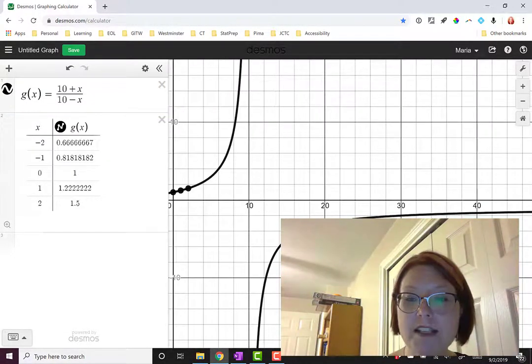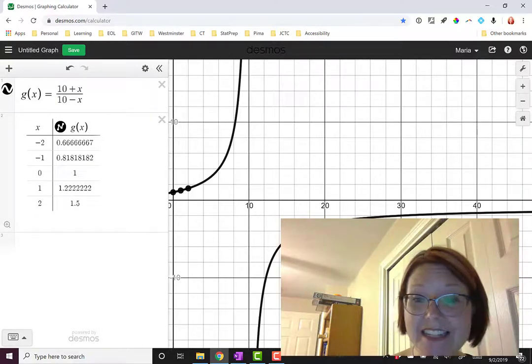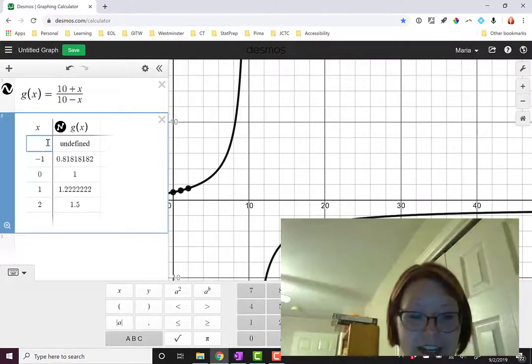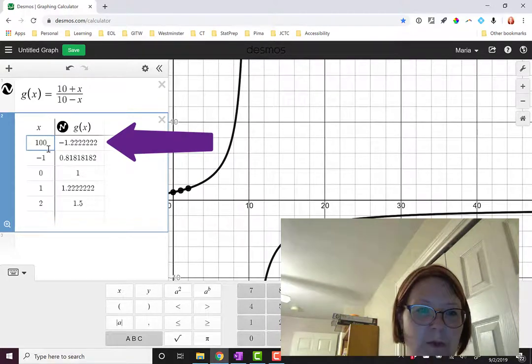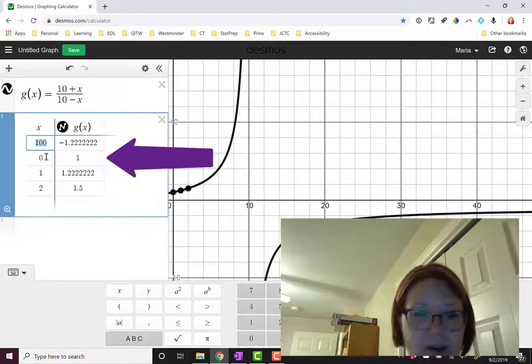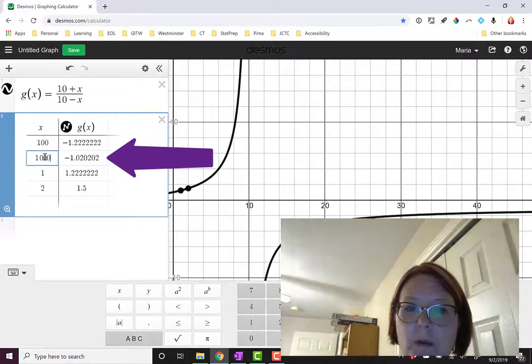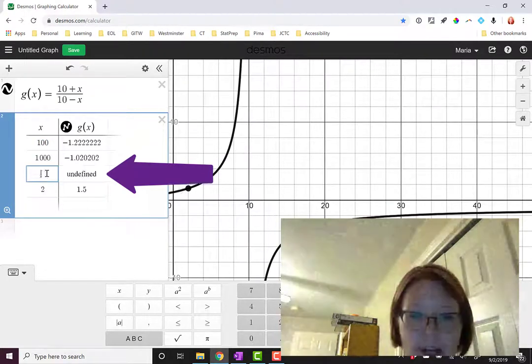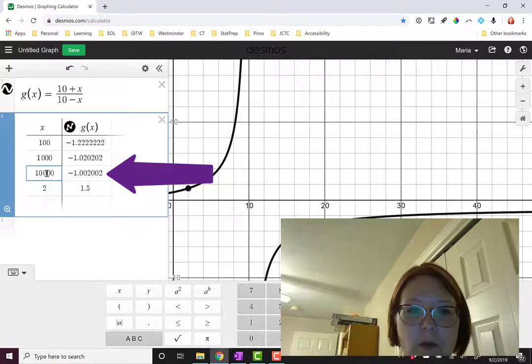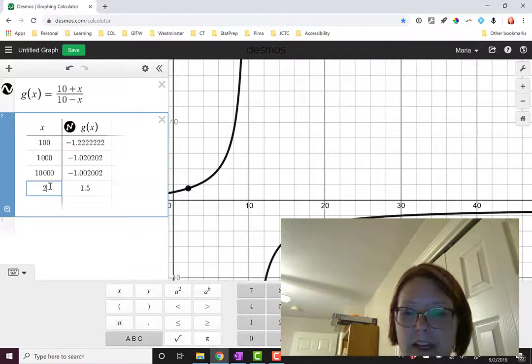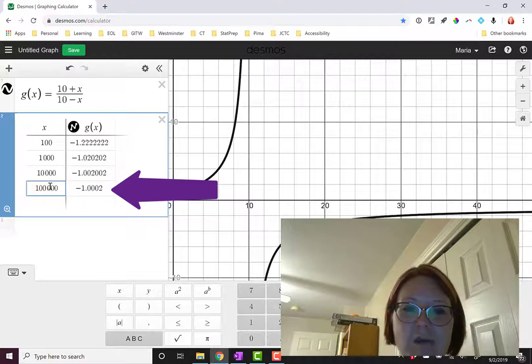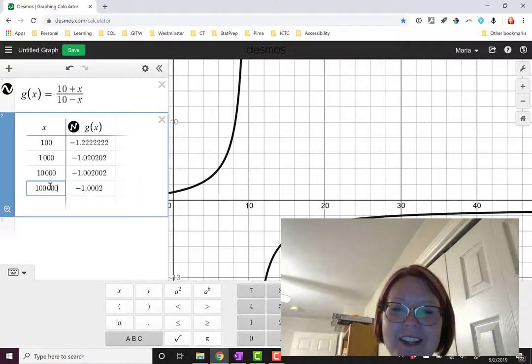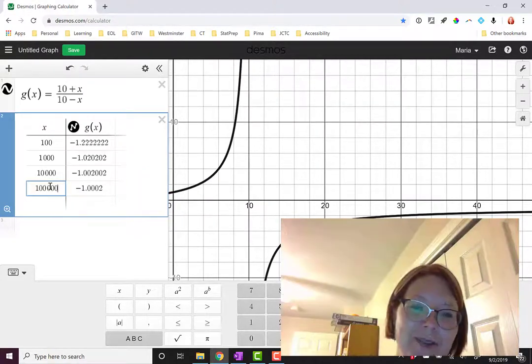Let's move over in the positive direction first. Since 10 isn't allowed, I'm going to start by changing -2 to positive 100. That gives me a value of -1.222 repeating. Let me try a value of 1000. It gives me -1.0202 repeating. How about 10,000? -1.0002. I'm getting closer and closer to -1. I'll try 100,000: -1.00002. So you can see I'm getting closer and closer to -1.